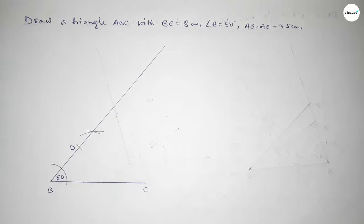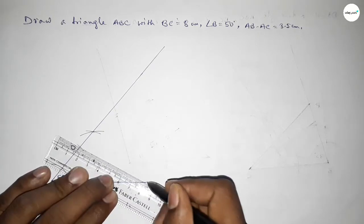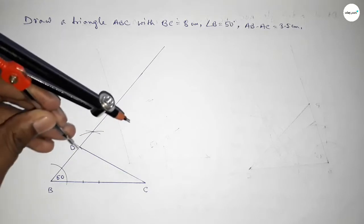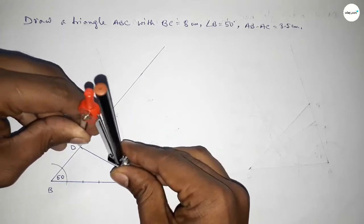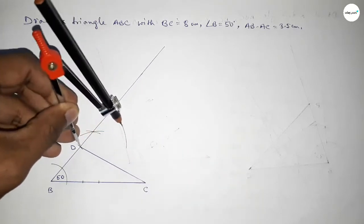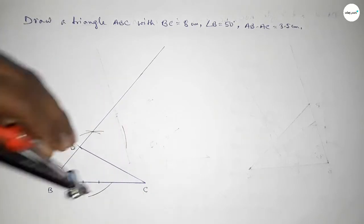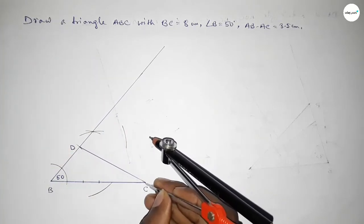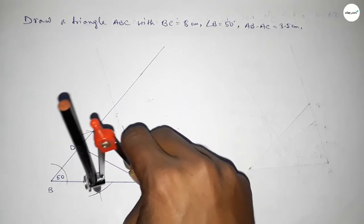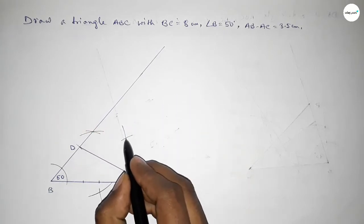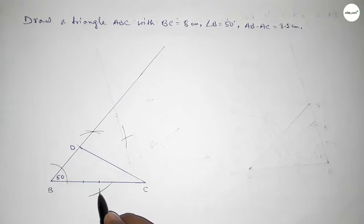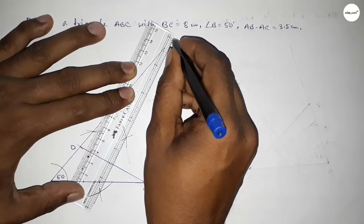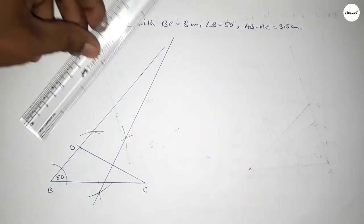Now joining D and C. Next we have to bisect line DC. Placing the compass at D and taking a radius greater than half of DC, drawing an arc, then with the same length placing the compass at C and cutting, so both curves intersect at two points.